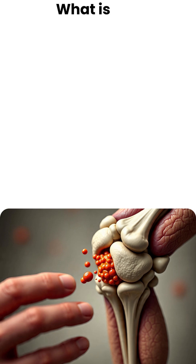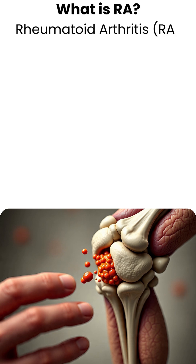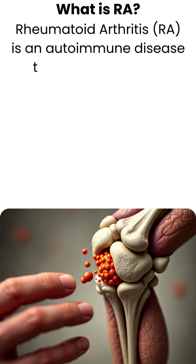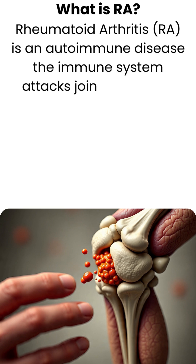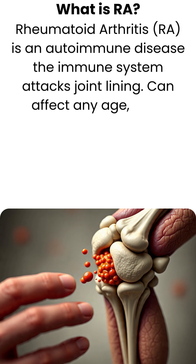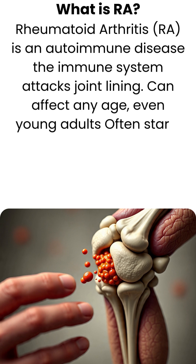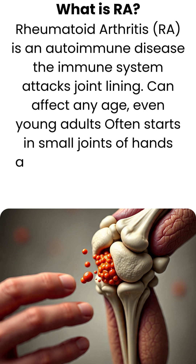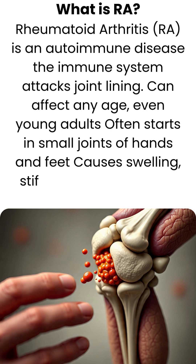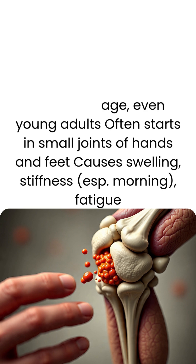What is RA? Rheumatoid arthritis is an autoimmune disease where the immune system attacks the joint lining. It can affect any age, even young adults, and often starts in the small joints of the hands and feet. It causes swelling, stiffness early in the morning, and fatigue.